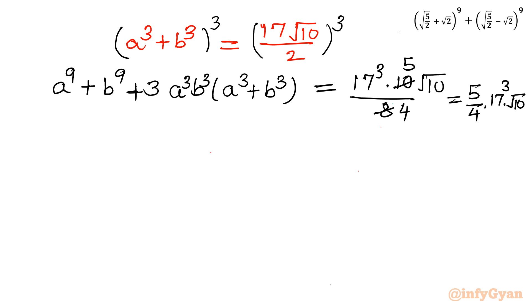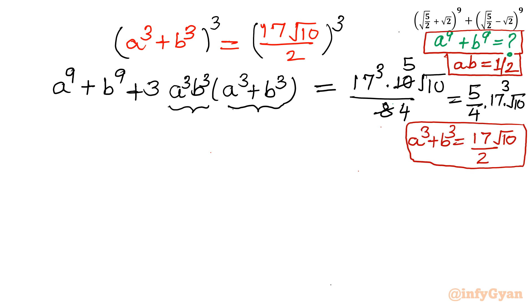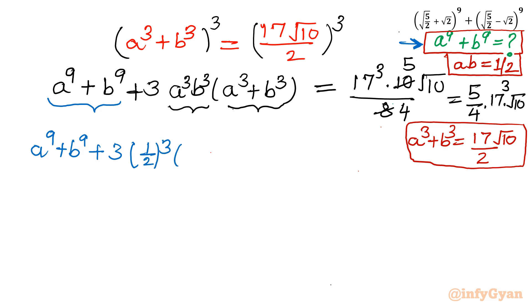Now we substitute a³ + b³ = (17√10)/2 and ab = 1/2 (so a³b³ = (ab)³ = 1/8) into the left side: a⁹ + b⁹ + 3 × (1/2)³ × (17√10)/2 = (5/4) × 17³ × √10.